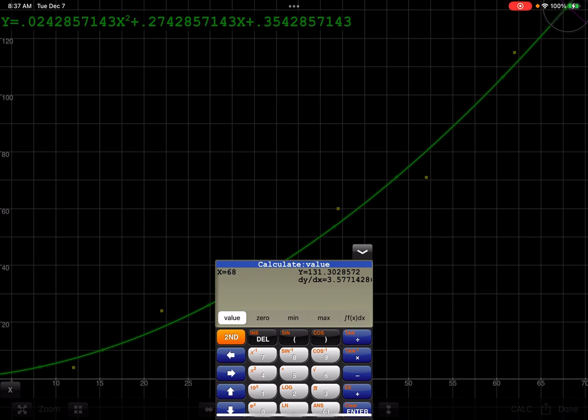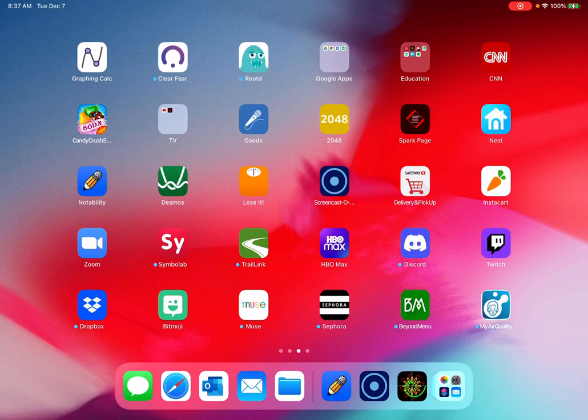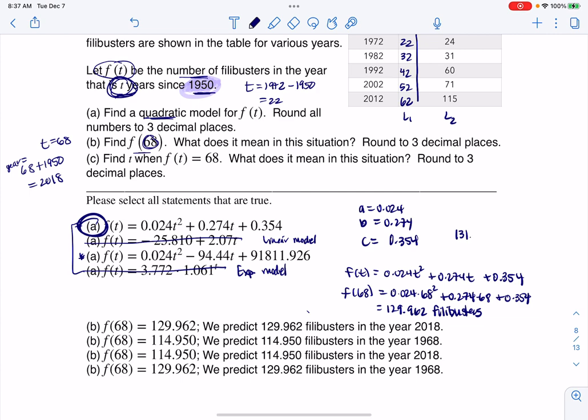It gives me a slightly higher number at 131.303. On the calculator graph screen, it was 131.303 filibusters. You can see there's a slight discrepancy. This was us just plugging into the model. Why is there that discrepancy? It's because in our model from part A, we only went to three decimal places. The calculator answer has all of the decimal places saved, so it's actually a little bit more precise. But if I look at the options, even if you had 131, the 129 is the closer answer to it. So I would rule out this option and this option. I'm on board with the 129.962, but I'm not on board with the year down here. So this one says 1968. That's no good. This is my correct answer.